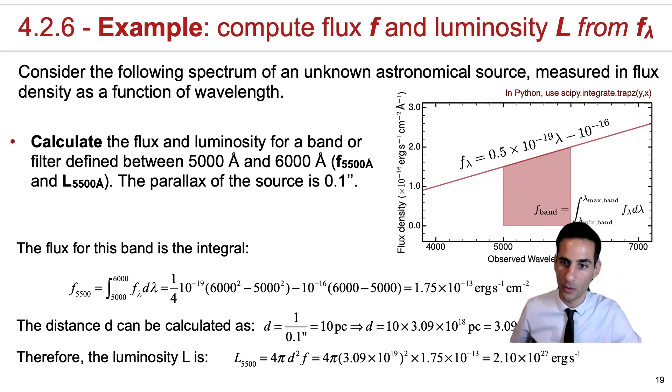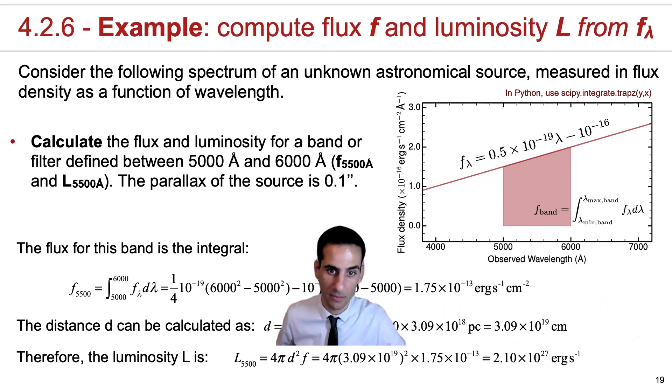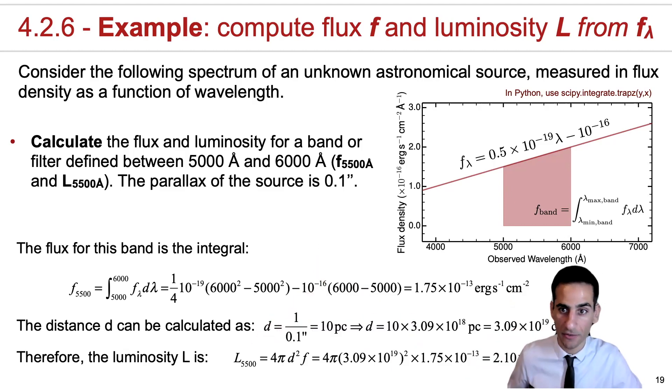So that ultimately we calculate the luminosity of the source, which is 2.1 times 10 to the 27. And to be accurate, because this is not a volumetric luminosity, I've also indicated that this is L at 5500 angstrom, so this is the wavelength in between from the minimum and maximum. So I hope this is clear as a first example, but we'll come back to this and do slightly more complicated examples as well.